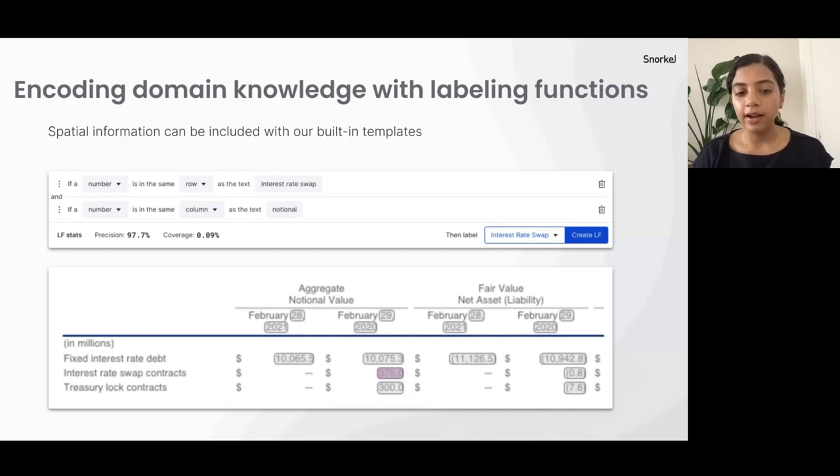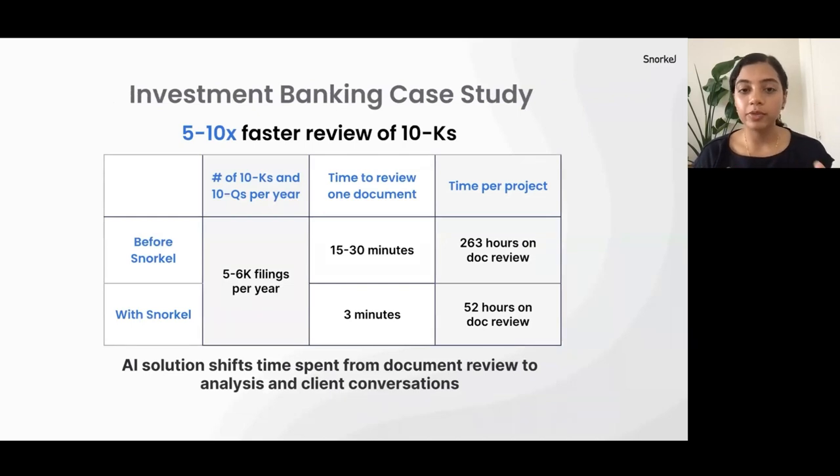So really simple to get started. But you can also define complicated labeling functions. For example, here, I want to be able to extract out the entity in the table. So my LF would read if the number is in the same row as interest rate swap and the same column as notional, then label as interest rate swap. And we have these built in templates that allow you to encode spatial information in this way. And we also have SDK functionality that allows you to import your own external knowledge sources and define your own custom logic, where you're able to make use of Snorkel's internal representation of text and spatial information to define whatever complex logic you would like to.